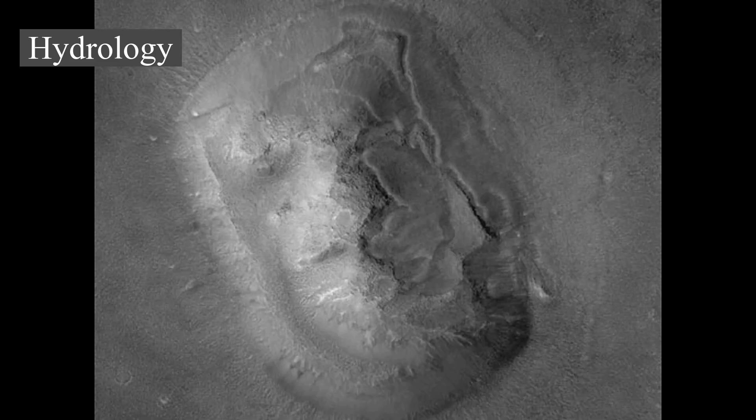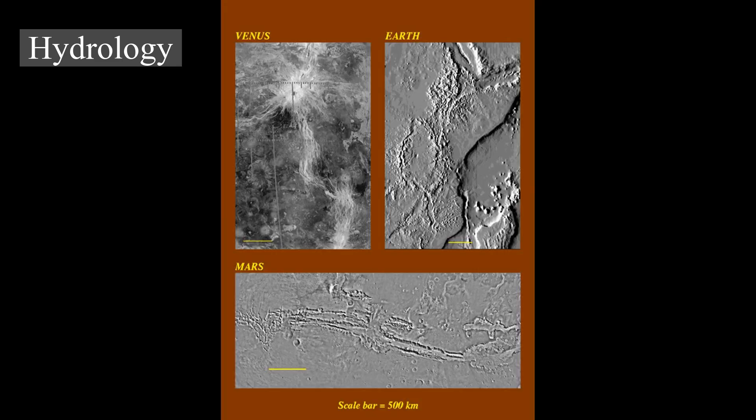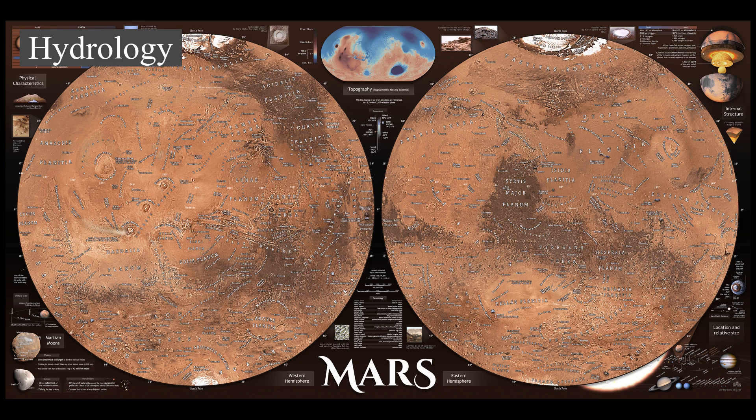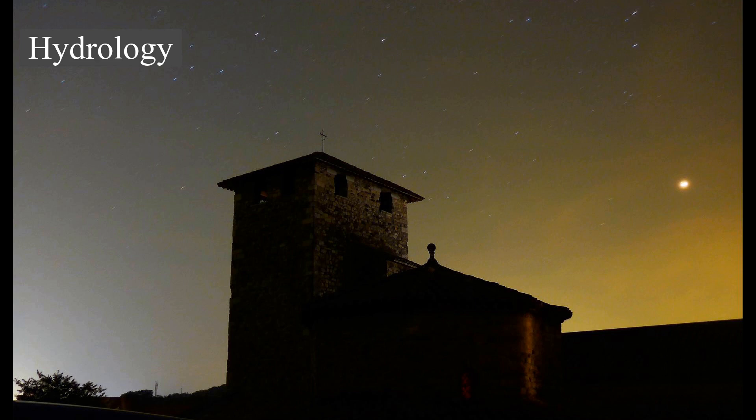Landforms visible on Mars strongly suggest that liquid water has existed on the planet's surface. Huge linear swathes of scoured ground known as outflow channels cut across the surface in about 25 places, thought to be a record of erosion caused by the catastrophic release of water from subsurface aquifers. One of the larger examples, Madan Valleys, is 700 kilometers long — much greater than the Grand Canyon — with a width of 20 kilometers and a depth of 2 kilometers. The youngest of these channels are thought to have formed only a few million years ago.